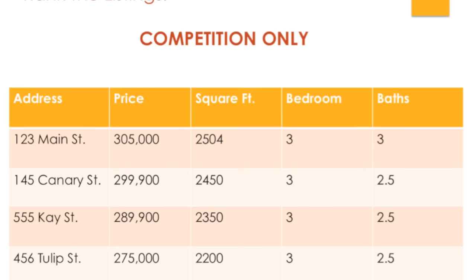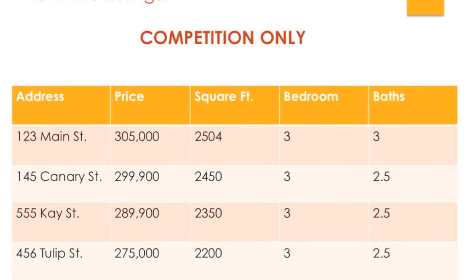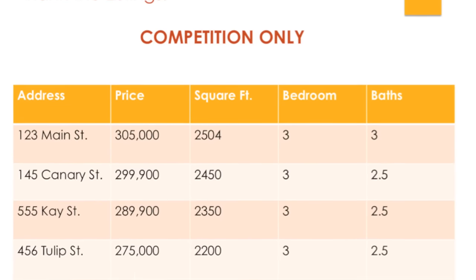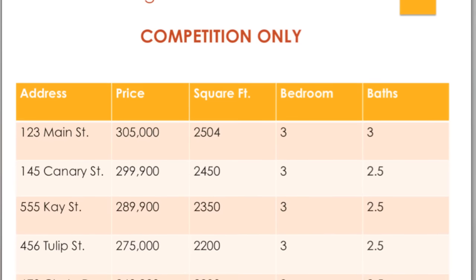In other words, active listings. Step two: you want to take those competitive listings and put them in a list in descending price order — the most expensive house first to the least expensive last. Then add other information like size, number of bedrooms, and number of bathrooms. Step three is to take your subject property — you've generated a range from your CMA.